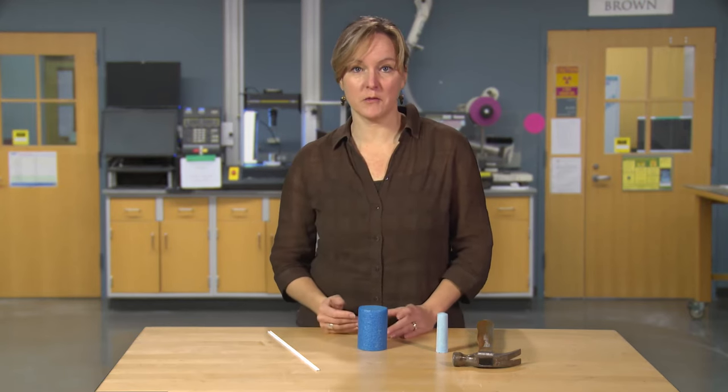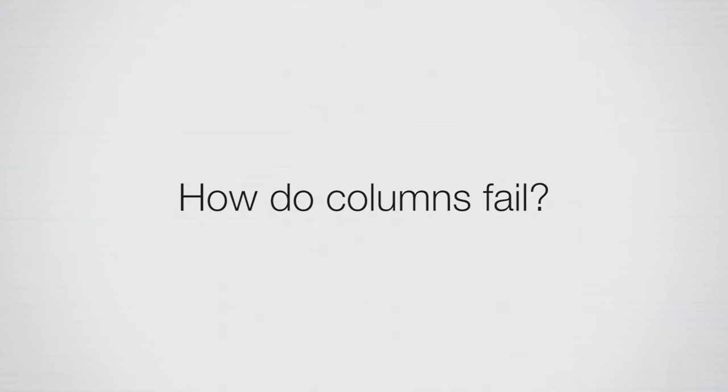So I hope through experimentation you were able to get a better feel for columns and maybe discover what factors affect how a column will behave. So how do columns fail? It turns out there's two different ways a column can fail.